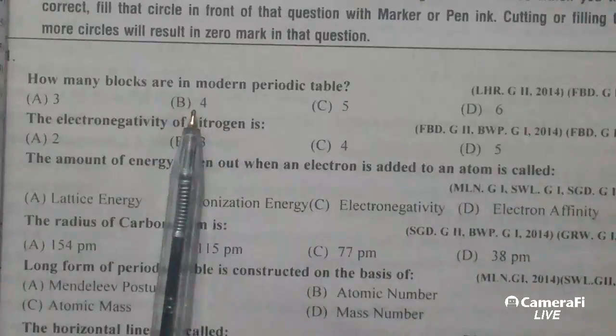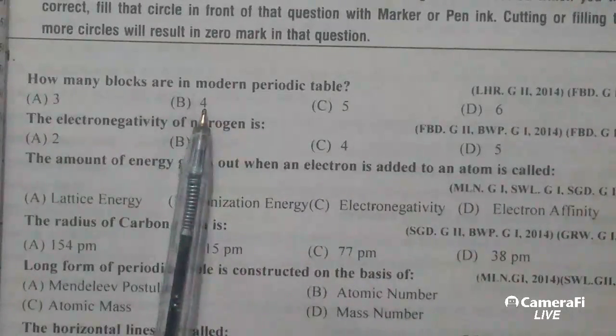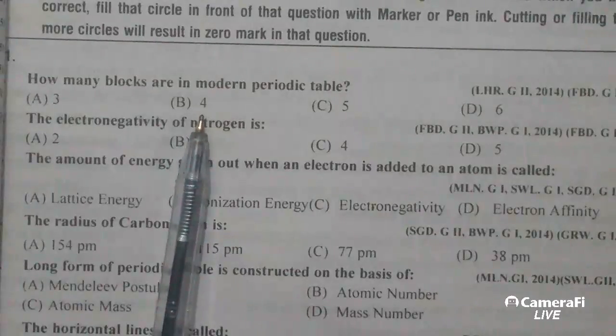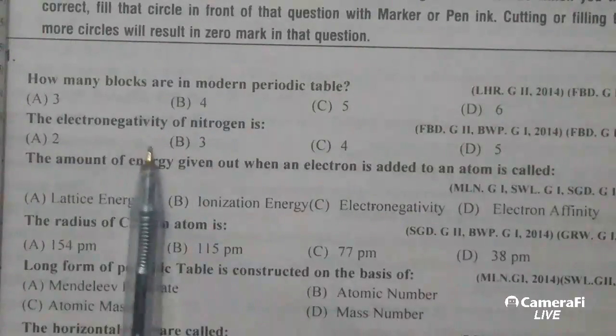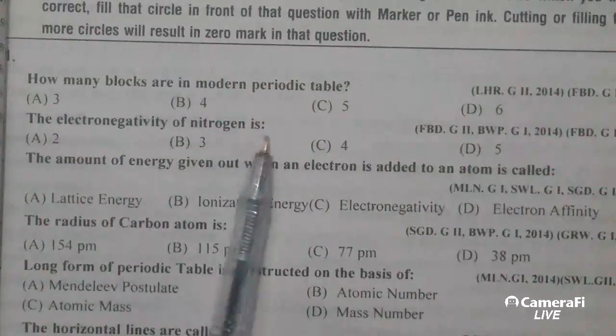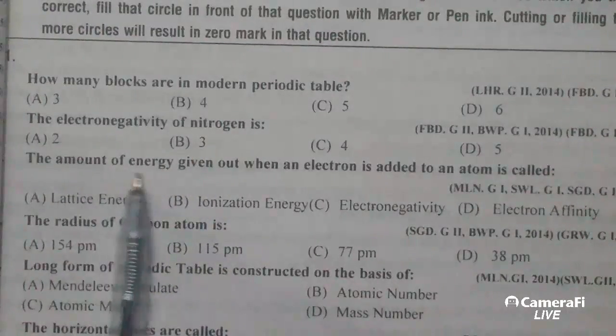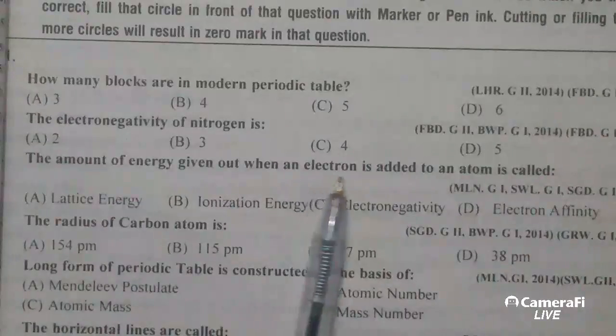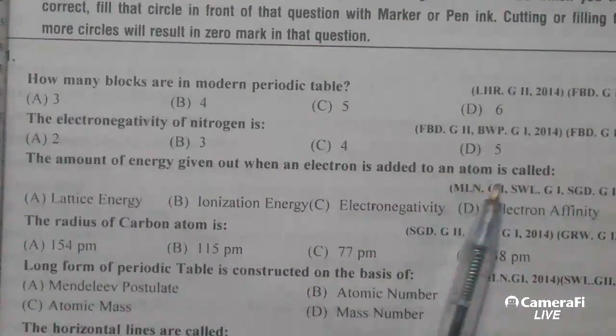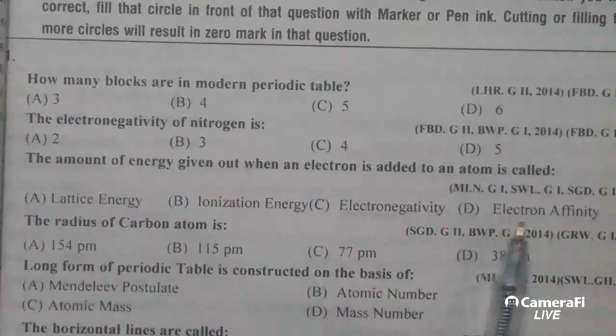The electronegativity of nitrogen is 3. The amount of energy given out when an electron is added to an atom is called electron affinity.